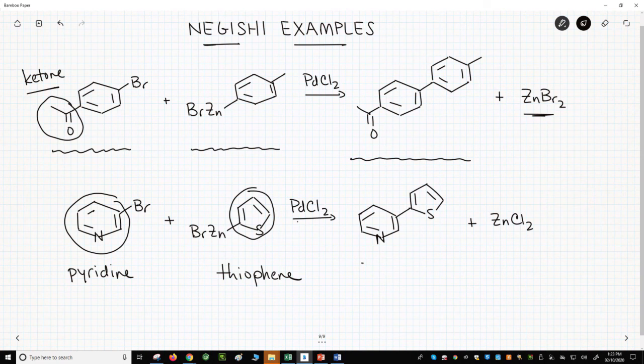The product is still a biaryl because it contains two aromatic rings. So that's the Negishi coupling. Negishi couplings are cross-coupling reactions in which the aryl metal is an organozinc reagent. Organozincs are made by first forming a Grignard or organolithium and reacting it with zinc bromide to generate the zinc-carbon bond.